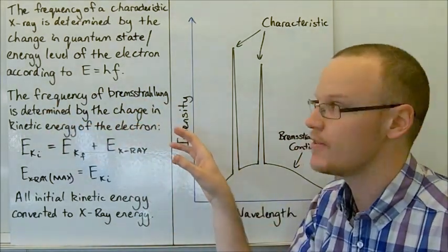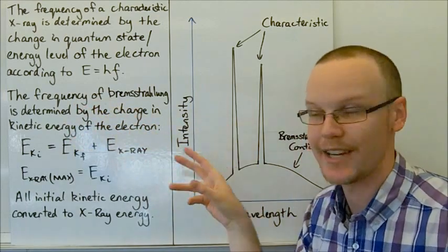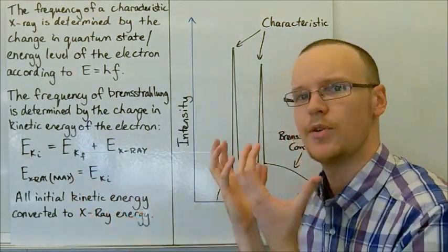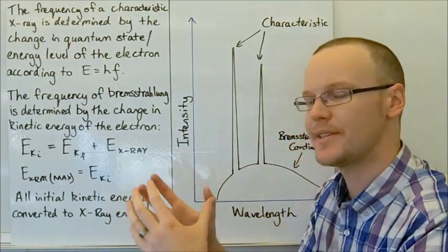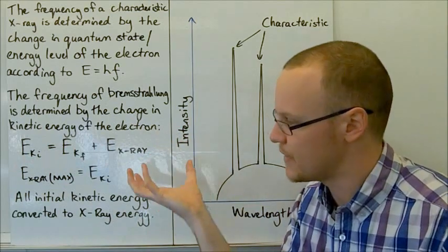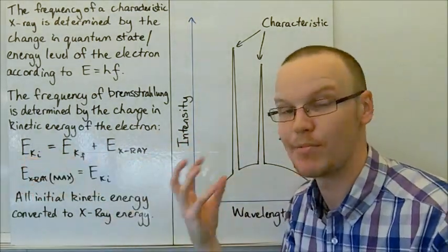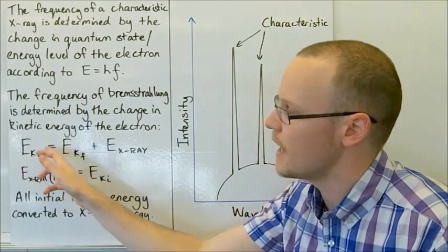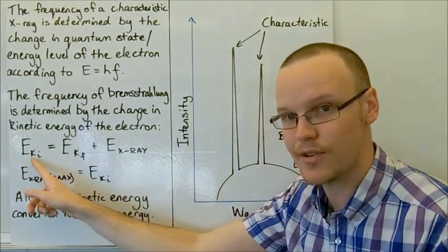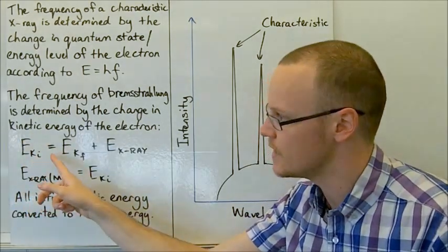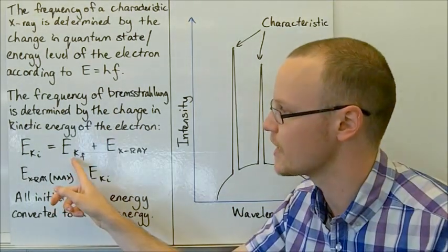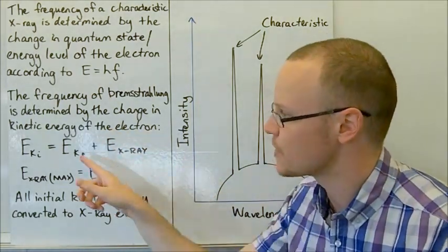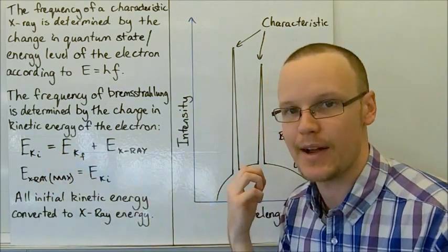For Bremsstrahlung, however, it's determined by the change in kinetic energy of the electron. The energy in needs to equal the energy out. If the metal is at rest relative to the electron, the only initial energy in the system is the kinetic energy of the electron. So the initial kinetic energy of the electron equals the final kinetic energy of the electron plus any leftover energy emitted as the X-ray — that leftover energy is the X-ray energy from the slowing down of the electron.